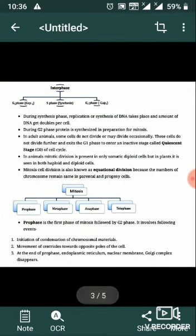In adult animals, some cells do not divide or may divide occasionally. These cells do not divide further and exist in G1 phase or enter an inactive stage called the quiescent stage, or G0 phase of the cell cycle.